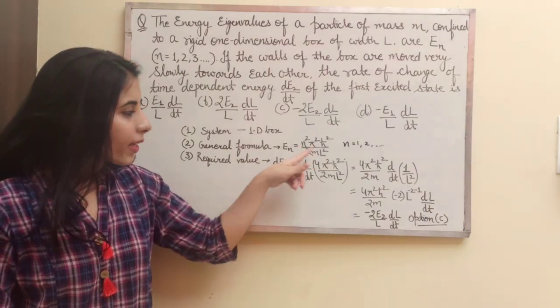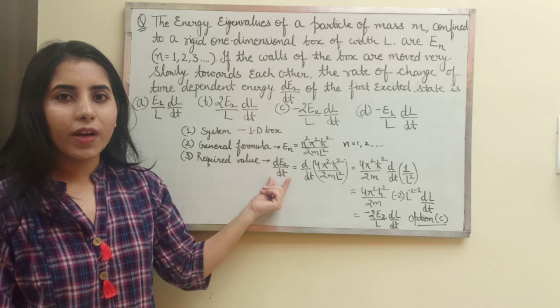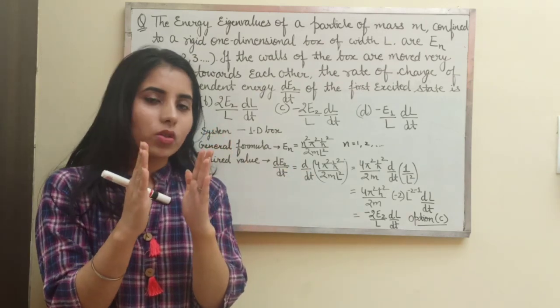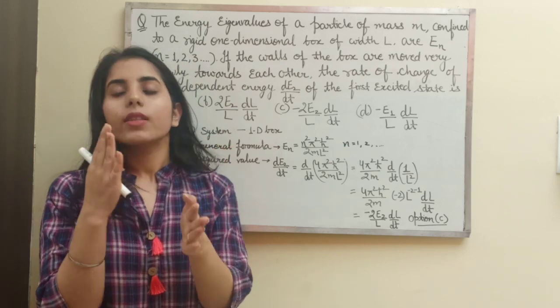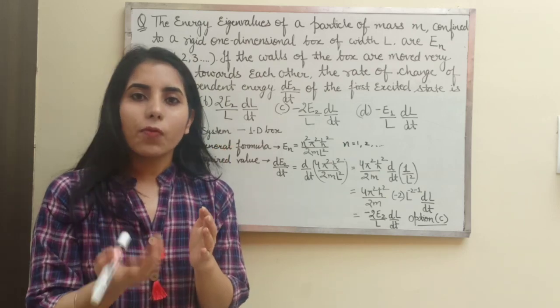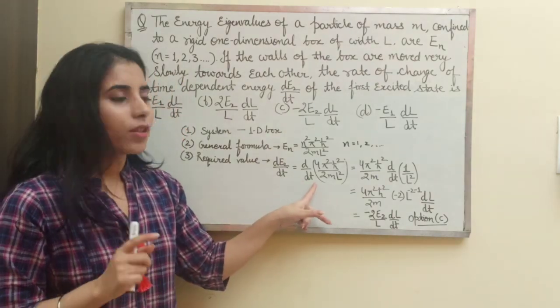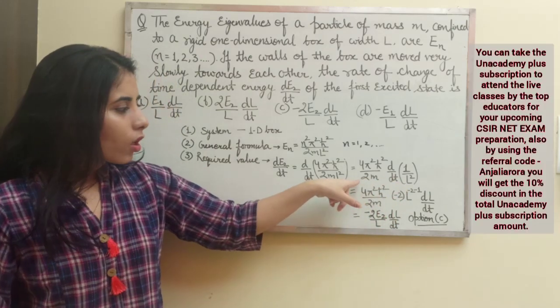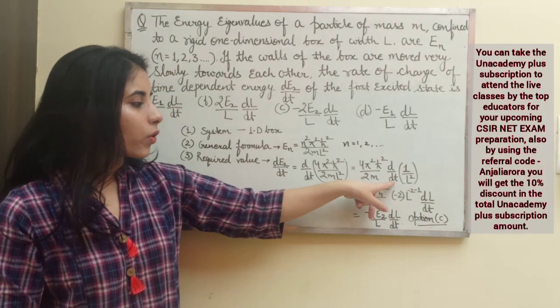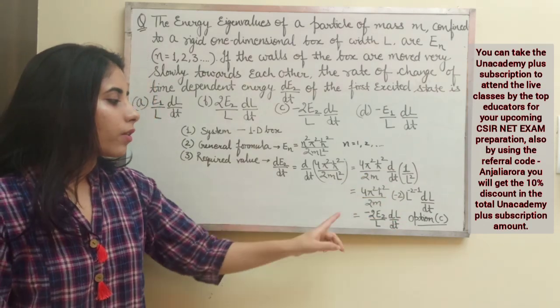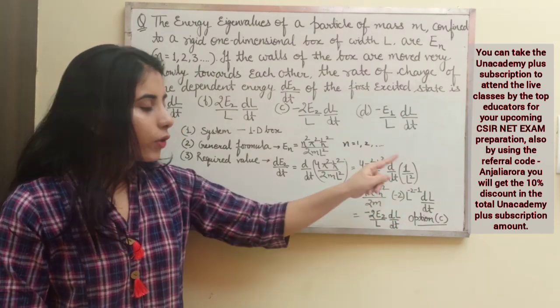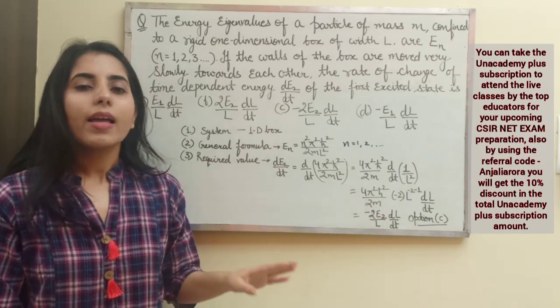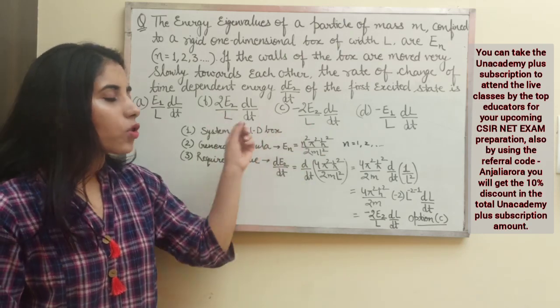When we are going to put n equals 2 we are getting this expression, that is d by dt because we want to find this. And when both the walls are moving towards each other slowly, what is going to get changed? The width. There will be change in the value of L. So when we are differentiating with respect to time we will differentiate the L value. Now we need to do differentiation, and after differentiating it we will be able to observe that we are getting the value of the complete expression as minus 2 E2 upon L dL by dt, which is matching with option C.